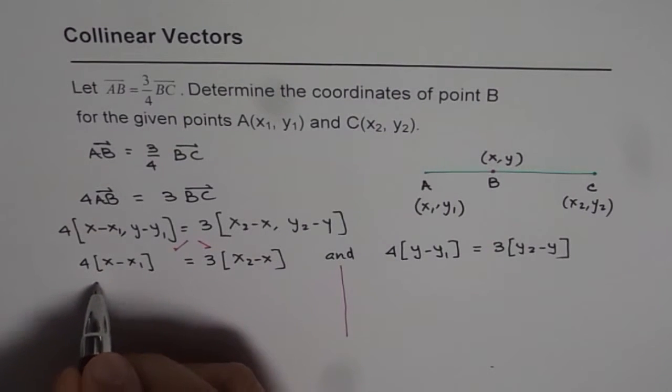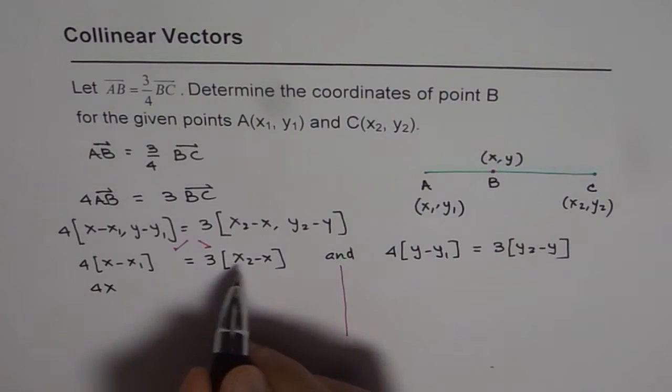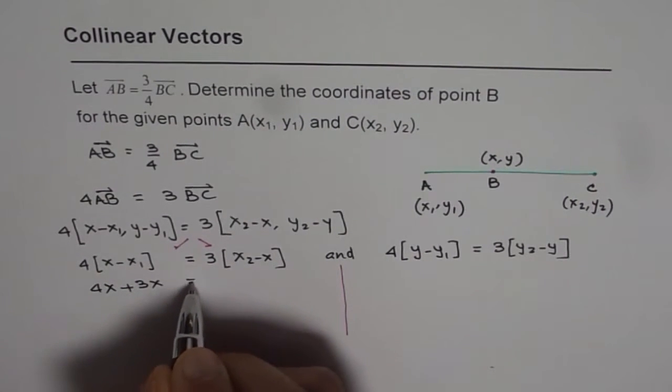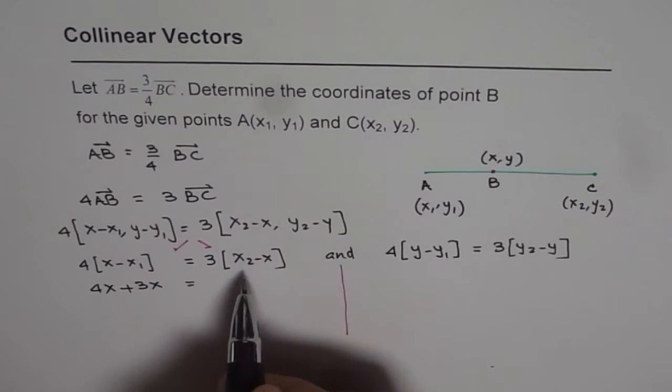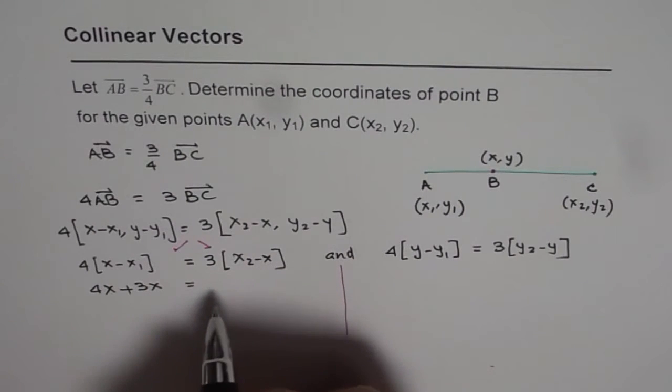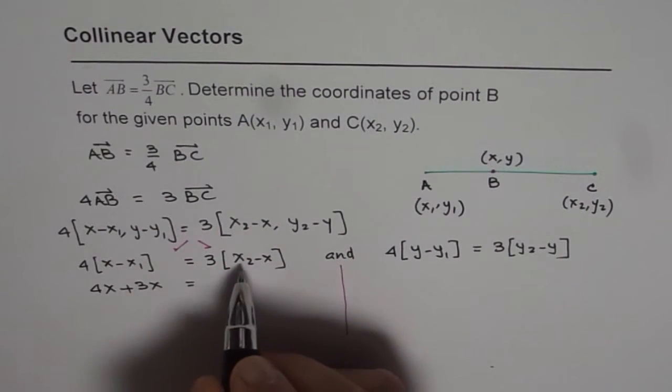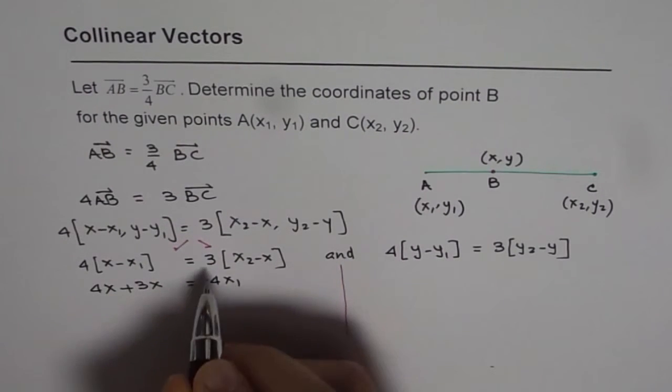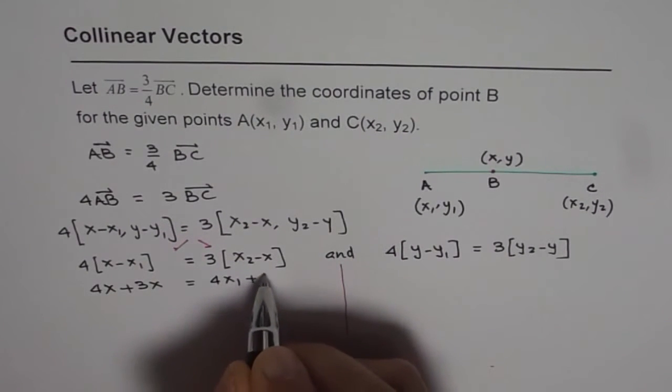We have 4x. From here we can bring x to this side, so it becomes 3x plus 4x, which is 7x. Taking x₁ to the right, we get 4x₁ plus 3x₂.